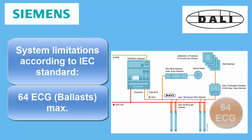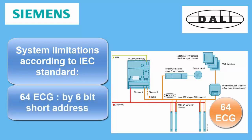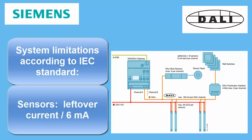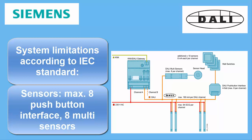The maximum number of ballasts on a DALI line is 64, represented by the 6-bit short address. There is no reduction in the number of ballasts for reasons of high current consumption, since the DALI standard requires ballasts not to exceed 2 mA each — so you can always use 64 ballasts per line. There can also be a number of inputs or sensors, which usually have a higher current rating than the ballasts, though the number of sensors has some limitations that normally won't be reached.